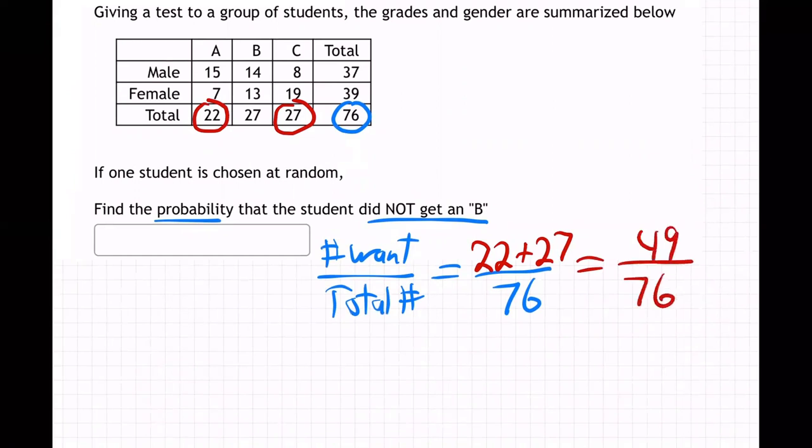See how I came up with that? If the person did not get a B, then they got an A or a C. So I just took the total number of people who got an A, which was 22, and the total number of people that got a C, added them up to get all the total number of people who did not get a B.